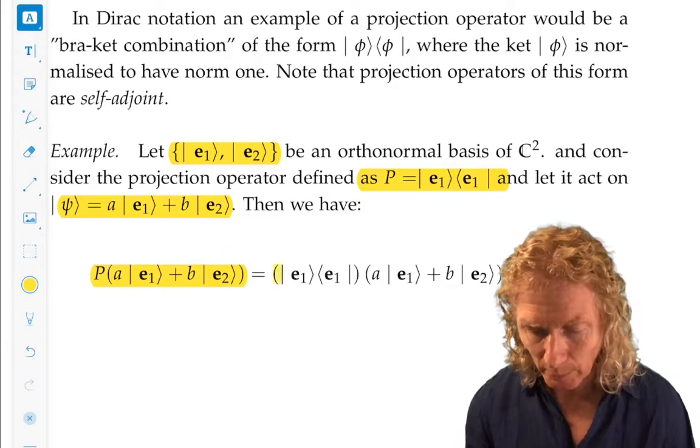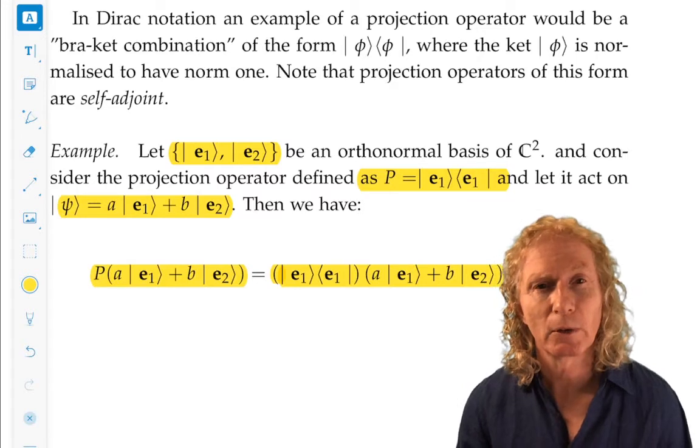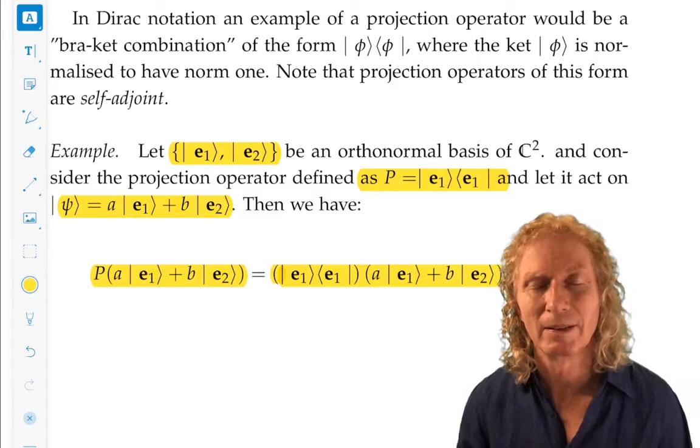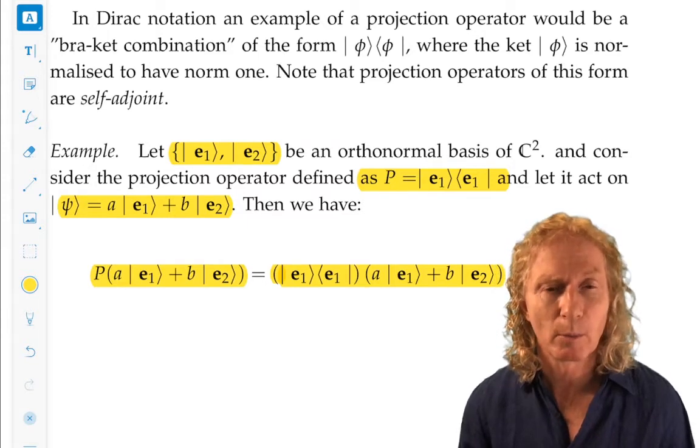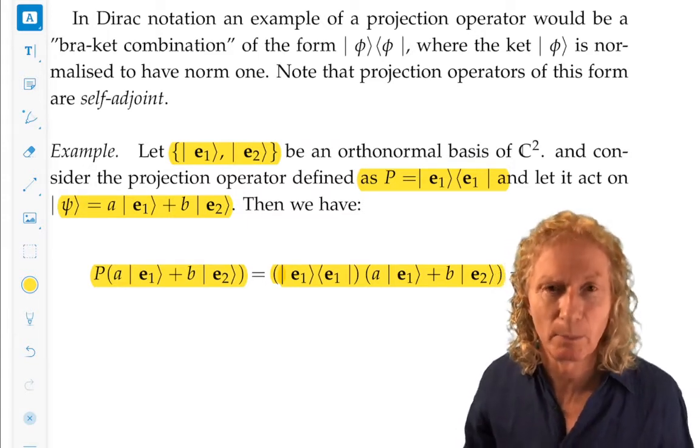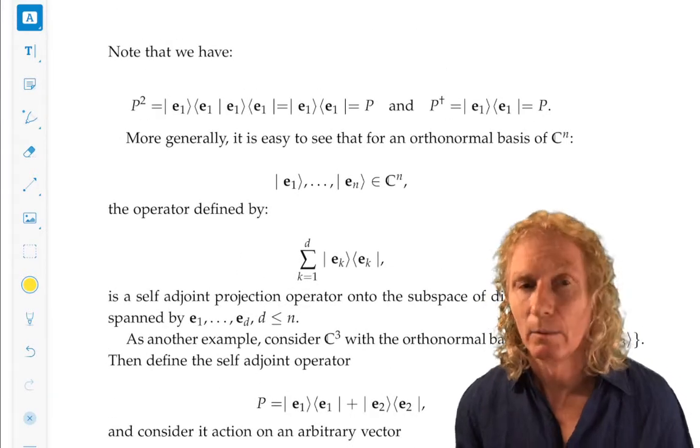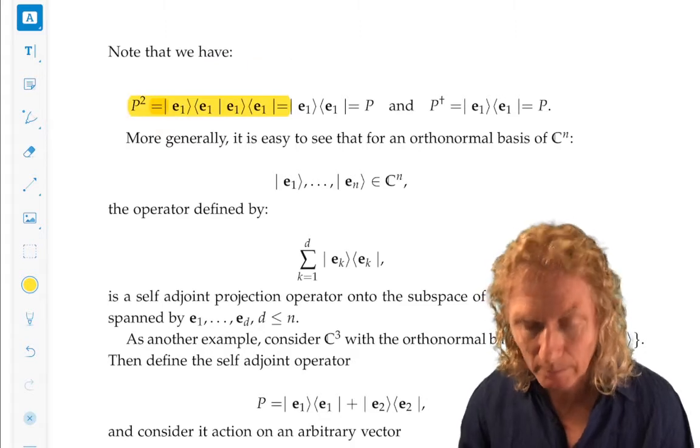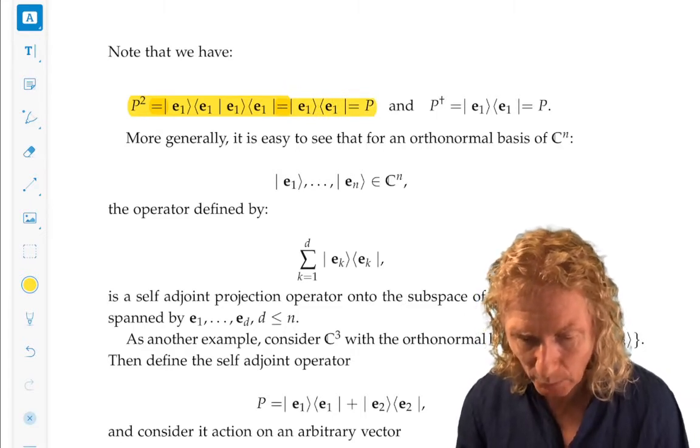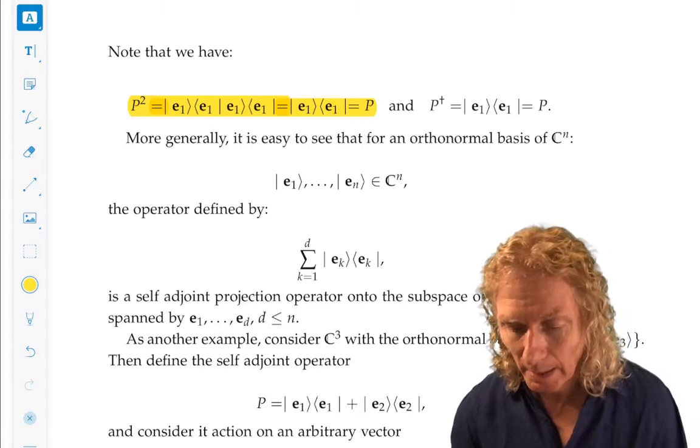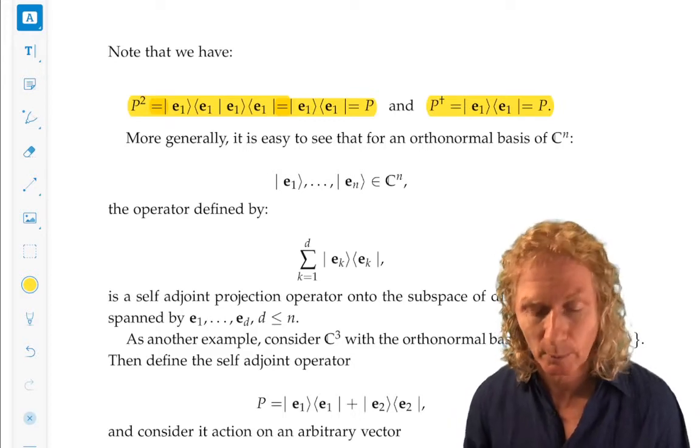And so we have the projection operator on the left acting on it. And this is an orthonormal basis. And we're just left with the part of it, or the component, the part in the E1 direction. That kind of makes sense because it's built out of the E1 bras and kets. Well, it makes sense because that's what they do in this case, these types of projection operators. Now, we need to verify that it actually is indeed a projection operator. And we just do this little calculation. And we see that P squared equals P. And we can easily verify that P is equal to its adjoint. So it's a self-adjoint operator.